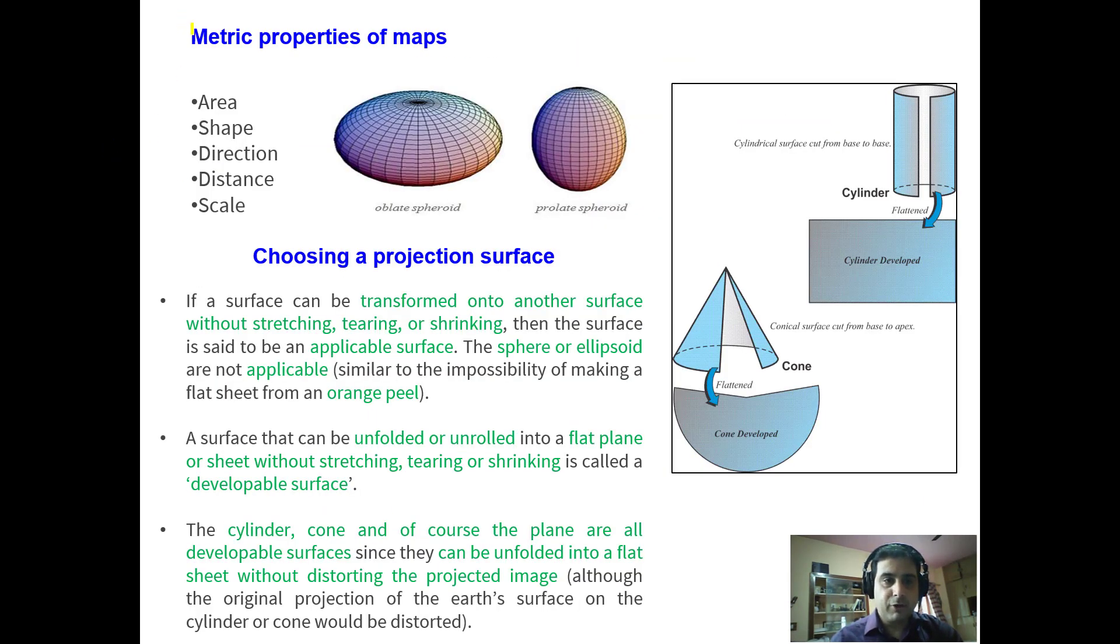Now what are different metric properties of maps? The metric properties of maps are area, shape, direction, distance and scale. Now while projecting 3D surface of earth to a 2D plane, our focus should be to minimize the errors and conserve the properties with respect to area, shape, direction, distance and scale.